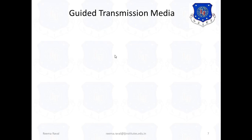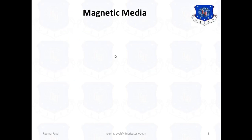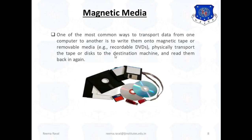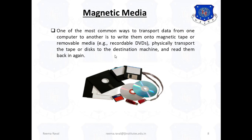Now, let us see the transmission media, in that first type guided transmission media. This includes magnetic media, twisted pairs, coaxial cable, power lines, fiber optics. First, consider the magnetic media. One of the most common ways to transport data from one computer to another is to write them onto magnetic tape or removable media, for example recordable DVDs. Physically transport the tape or disk to the destination machine and read them back again.